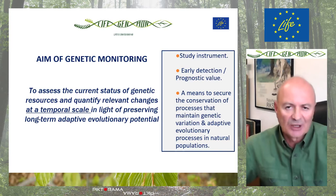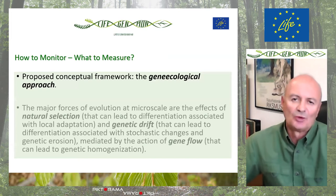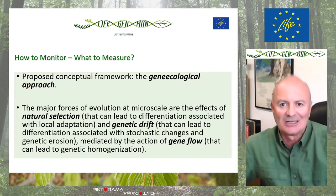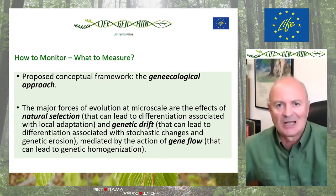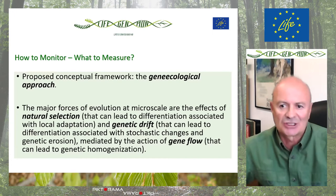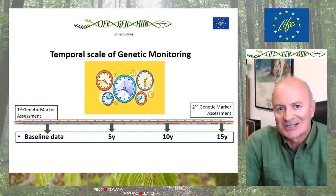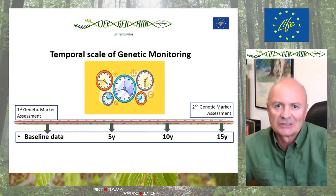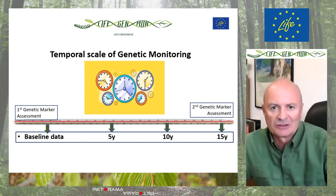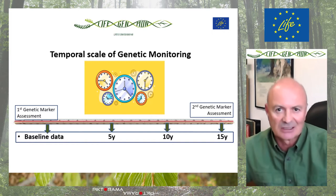The way to do that is by evaluating the genecological approach, which means evaluating natural selection, genetic drift, and gene flow at microscale. This exercise of evaluation has to be repeated over time, at shorter time intervals for phenotypic and demographic measurements, and at longer time intervals for genetic markers — in this case, for instance, every 15 years.